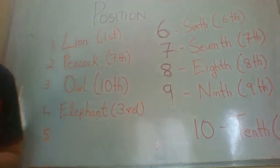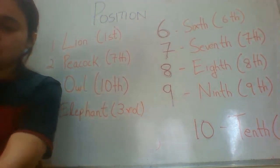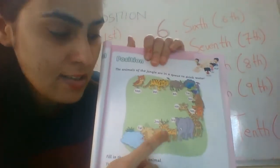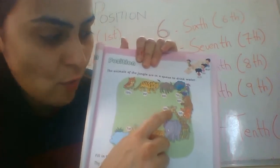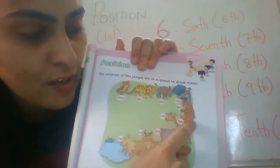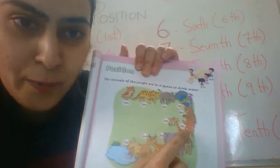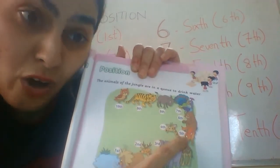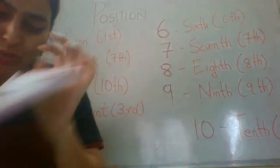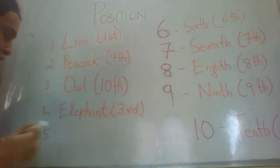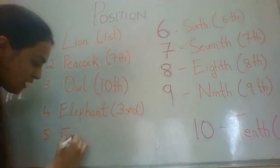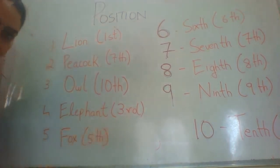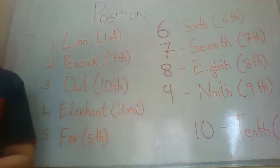The fifth question asks: what is the fifth animal in the queue? Counting from the front — first, second, third, fourth, and fifth — the fifth animal is a fox. So fox is at the fifth position.